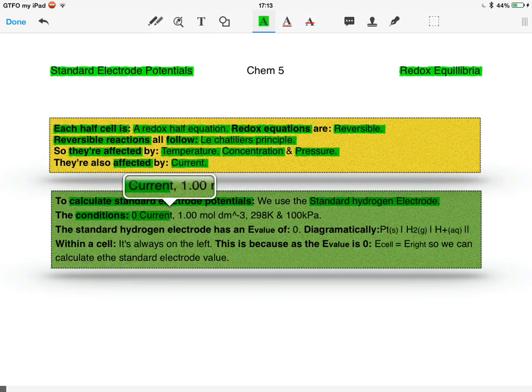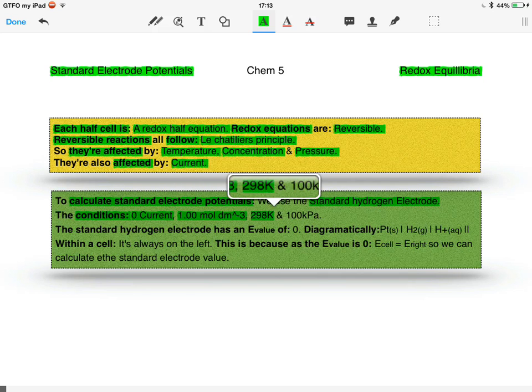That's zero current, 1.00 mol per decimetre cubed, 298 Kelvin which is also 25 degrees Celsius, and 100 kilopascals, which is also one atmosphere.